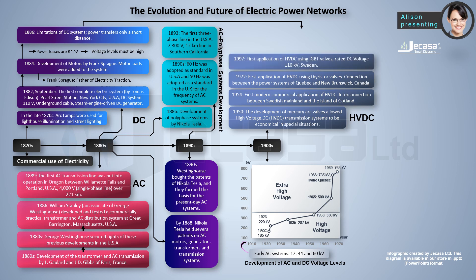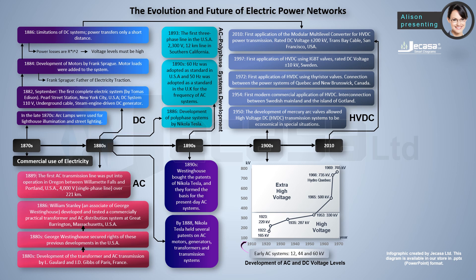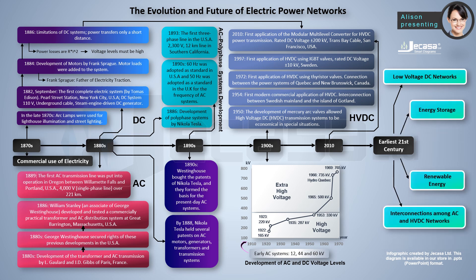In 1997, the first application of HVDC using IGBT valves was rated at DC voltage ±10 kilovolts in Sweden. In 2010, the first application of the modular multilevel converter for HVDC power transmission was rated at DC voltage ±200 kilovolts — the Trans Bay Cable in San Francisco, USA. The earliest 21st century advances include commercial applications in low-voltage DC networks, interconnections among AC and HVDC networks, energy storage, renewable energy, and smart grids.